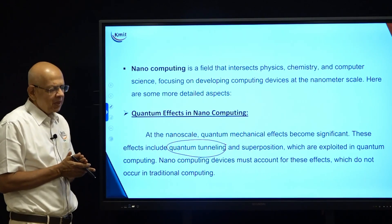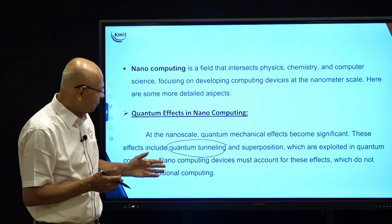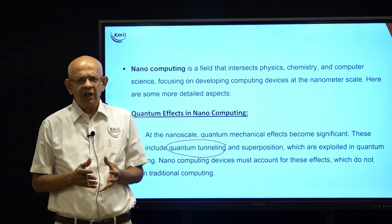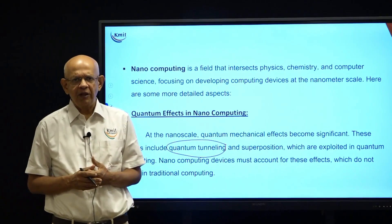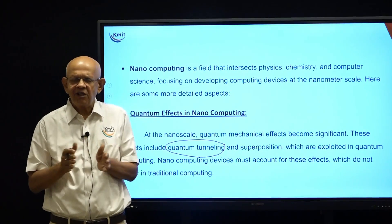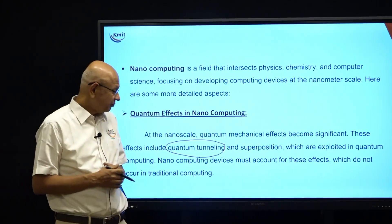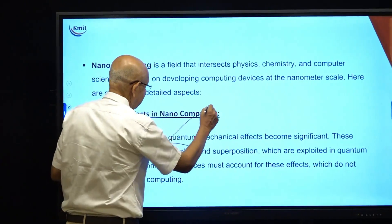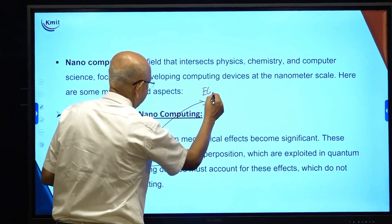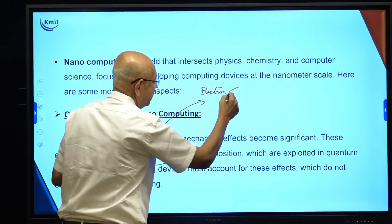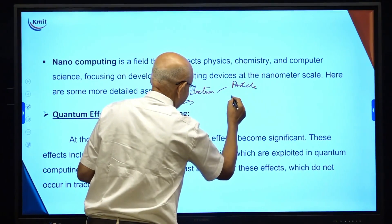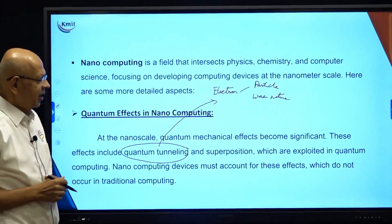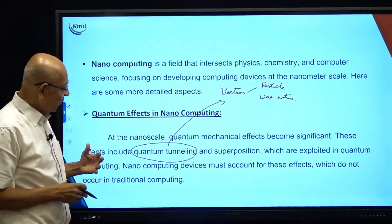Quantum tunneling is in some ways related to quantum computing. Superposition is a concept from quantum computing where we have the concept of a qubit, which can be in not just 0 and 1 states but many states in between, based on its probabilistic nature. That probabilistic nature brings us to quantum tunneling. An electron has both a particle nature and a wave nature. When you start exploiting the wave nature, you get quantum computing — the uncertainty — and also quantum tunneling.